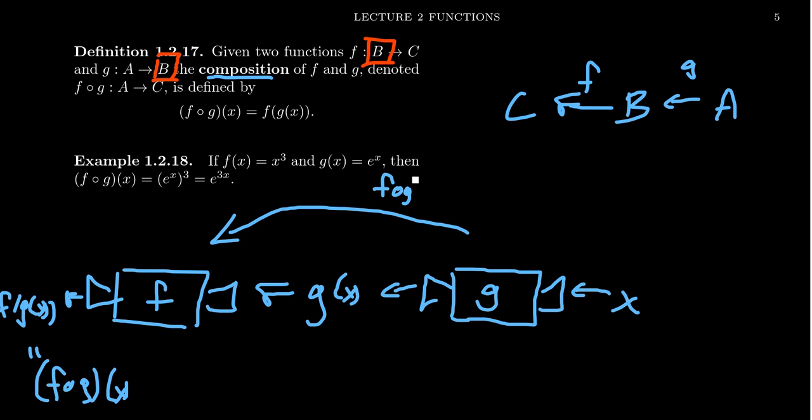The things coming out of G have to be compatible with the things going inside of F. If you have this incompatibility, this would be not well-defined whatsoever. So the co-domain of the first function has to be the domain of the second function, where the first function actually shows up on the right.